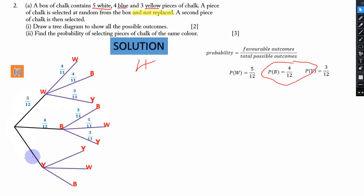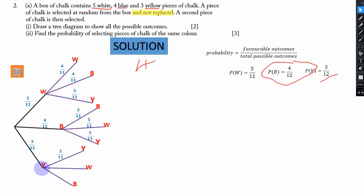On the last main branch, in the first draw we are picking yellow, so it is 3 over 12. In the second draw, since yellow was not replaced, it reduces from 3 to 2, giving 2 over 11. White remains 5 over 11, and blue remains 4 over 11. We are done filling in all the probability values.